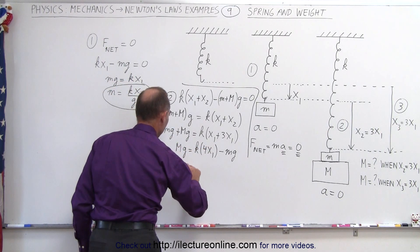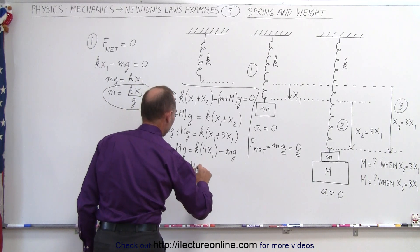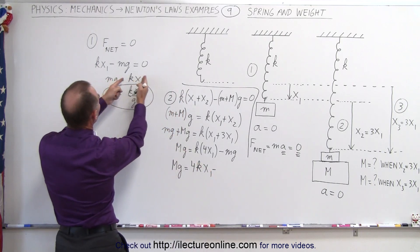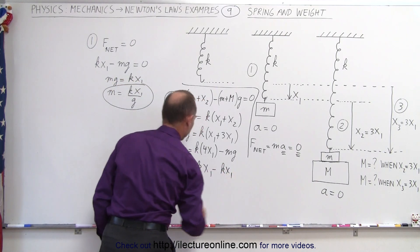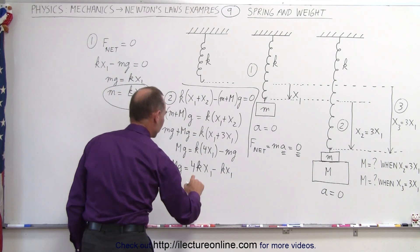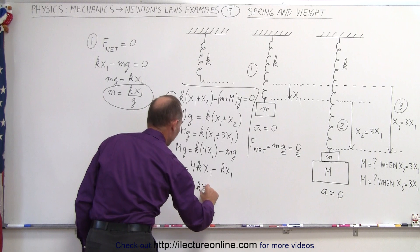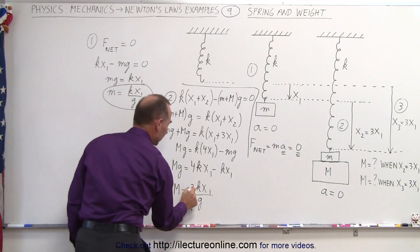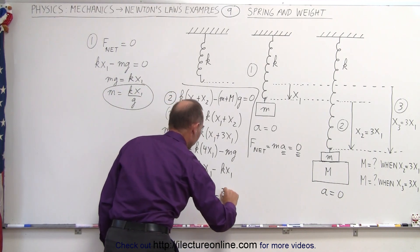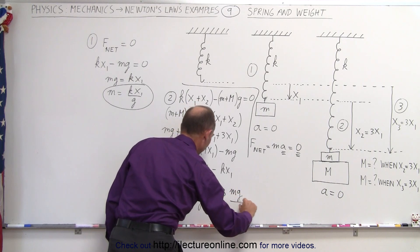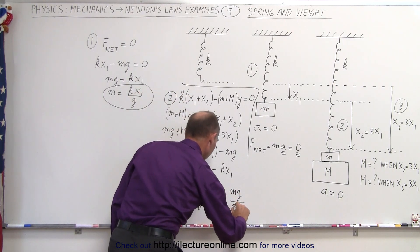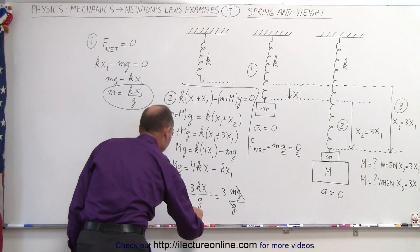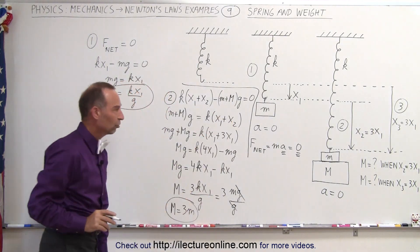So big Mg is equal to 4kx1 minus 1kx1, which means big Mg equals 3kx1. Dividing both sides by g, big M equals 3kx1 divided by g. And since kx1 equals mg, then 3kx1 equals 3mg. So big M equals 3mg divided by g, the g's cancel, and big M equals 3 times small m in our second situation.